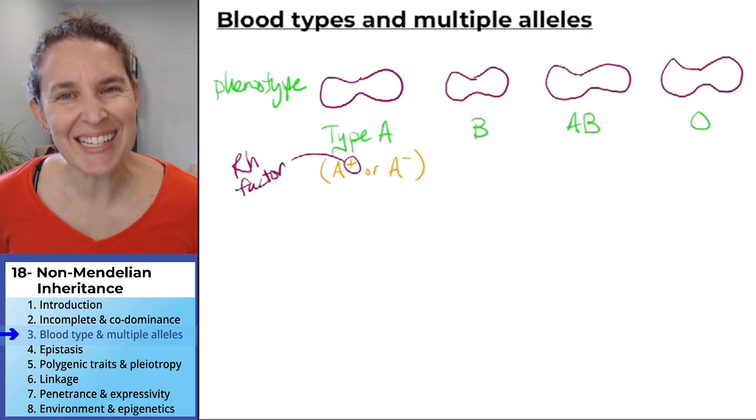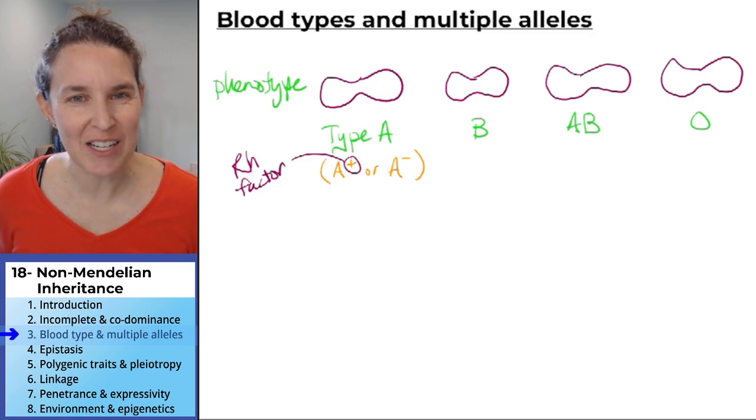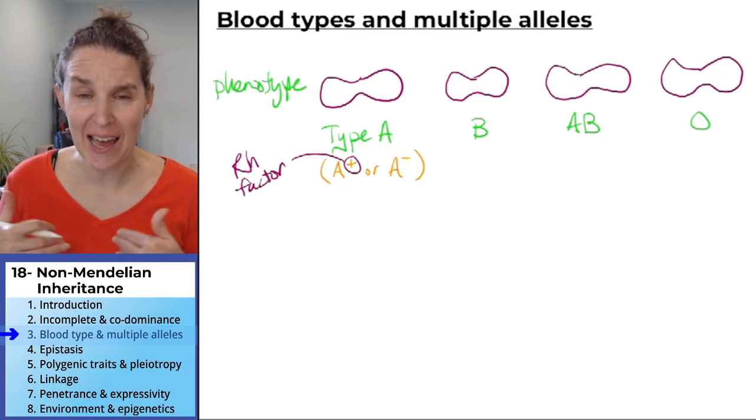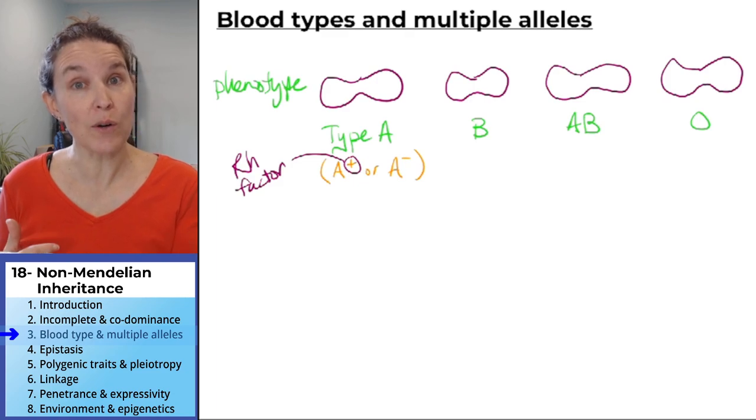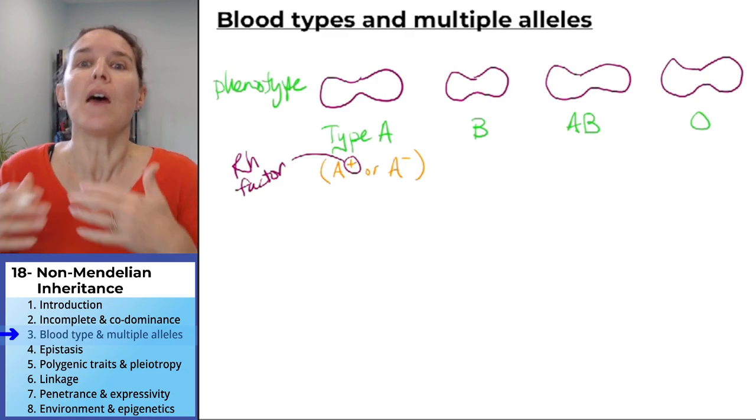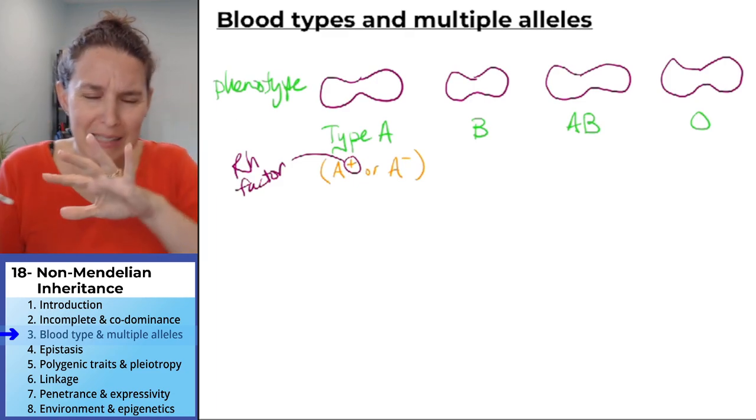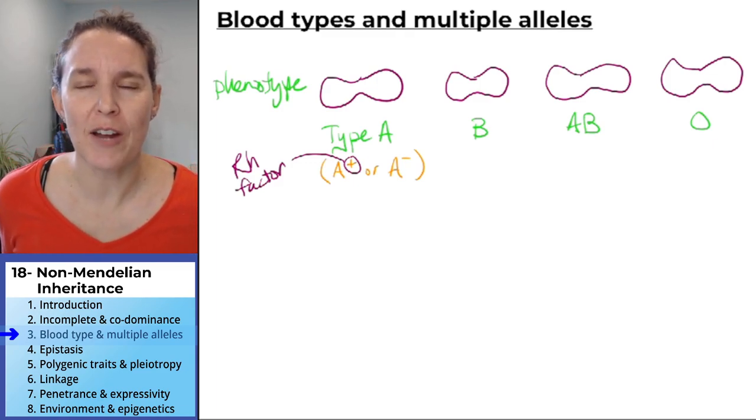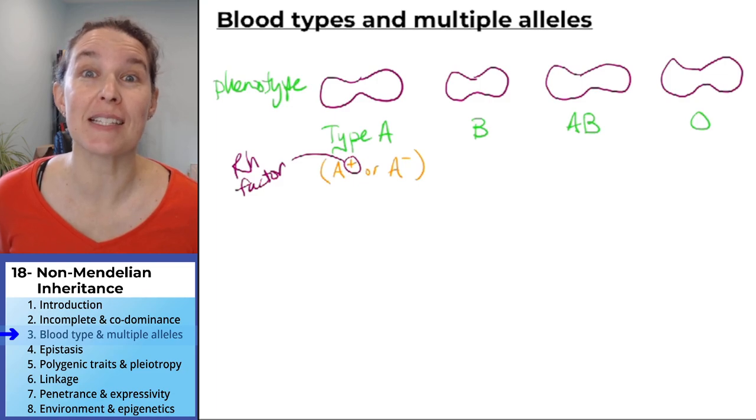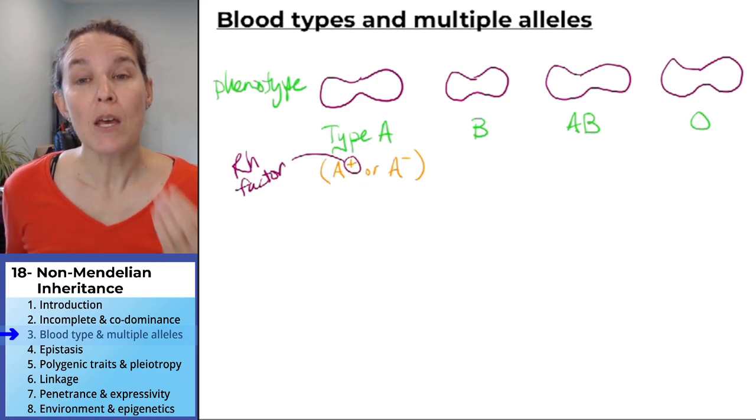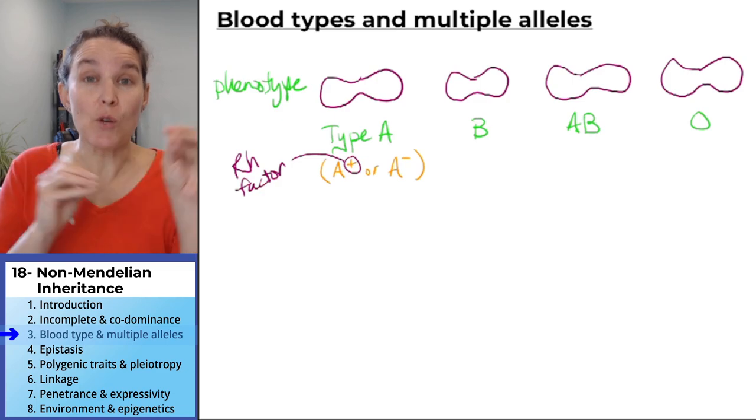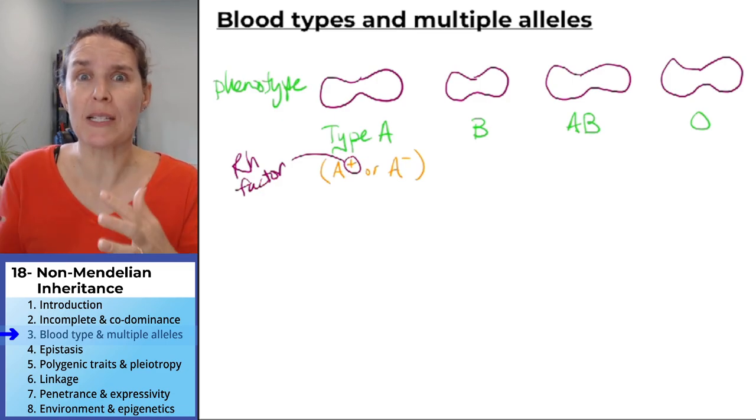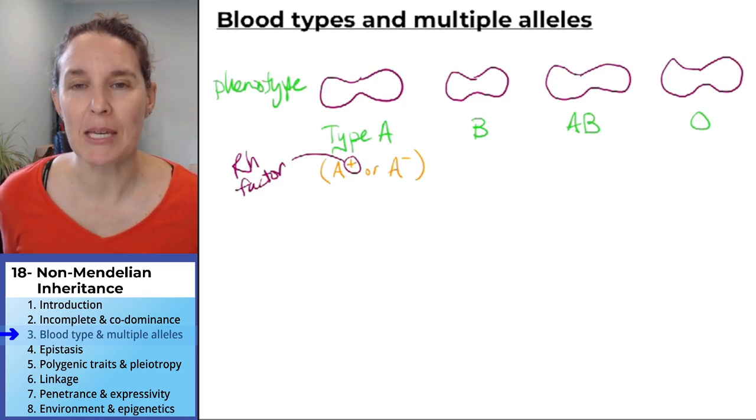For some reason, they don't use RH factor in genetics problems. And I don't know why, because I have heard that it is coded for by a gene. We're just going to leave that over there for when we do physio. So if you hear about RH factors or pluses and negatives, that's what it means.